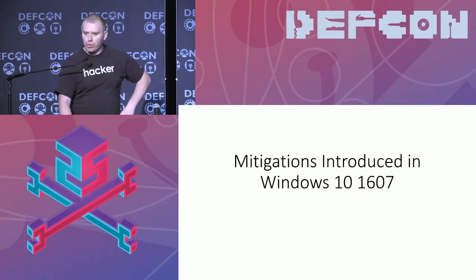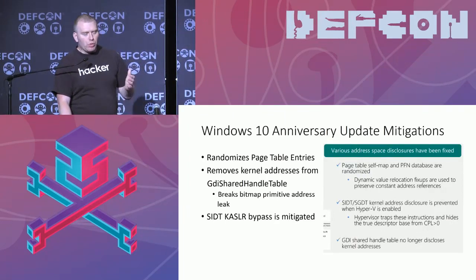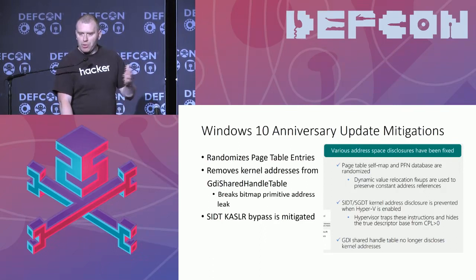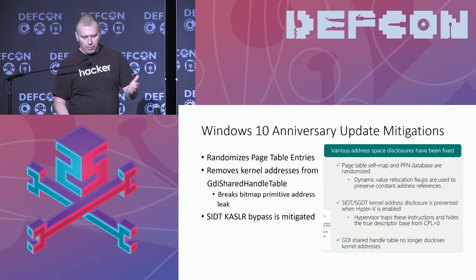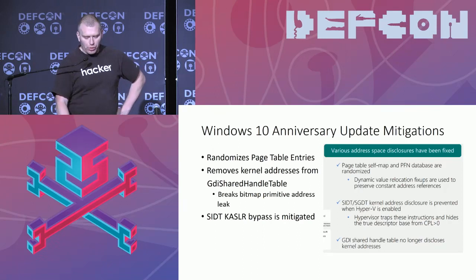In the Anniversary Update, Microsoft did quite a few changes. First of all, they randomized the page table entries, which means we can't just flip the bit because we don't know where it is anymore. They removed all the kernel addresses of bitmaps and other objects from the GDI shared user handle table, which means we don't know where to write anymore. And also the SIDT command has been mitigated — if using Hyper-V, it returns a bogus value so we don't know where the NT kernel pointer is.